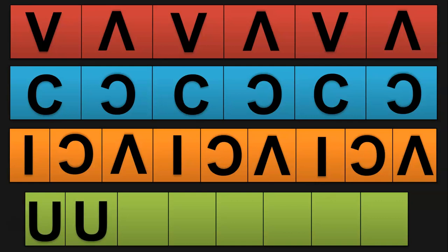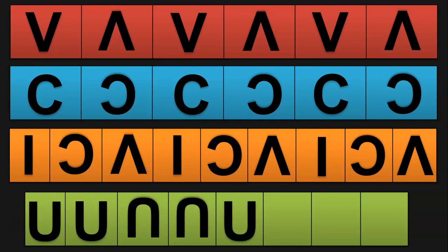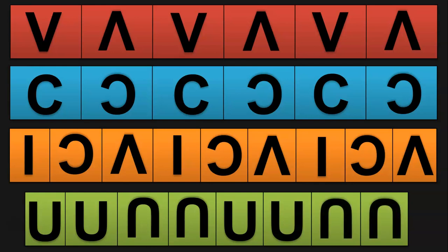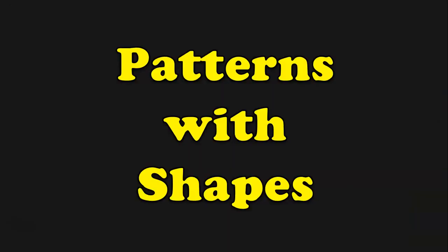Let us see another example. We have two U's followed by two inverted U's. Can you think and complete this pattern? We have four spaces given. What could be the next repetition? Yes, it will be two forward U's followed by two inverted U's. Don't they look very nice?